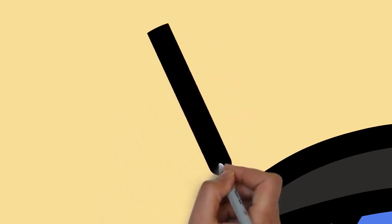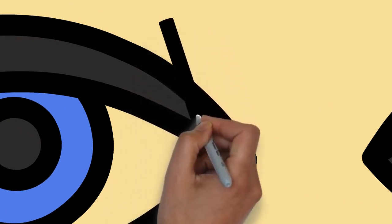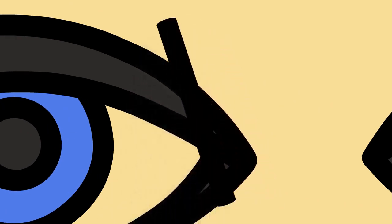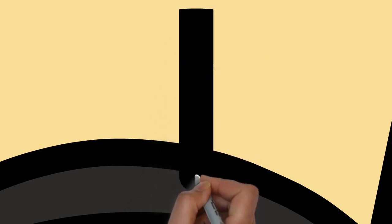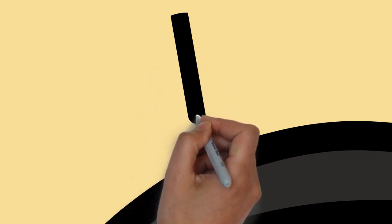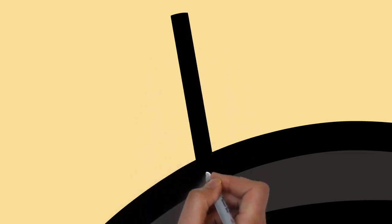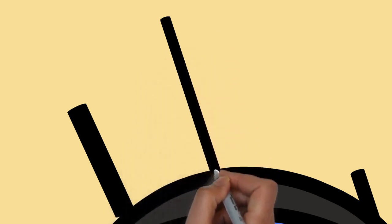In order along the optic axis, the optical components consist of a first lens, the cornea — the clear part of the eye — that accounts for most of the optical power of the eye and accomplishes most of the focusing of light from the outside world. Then an aperture, the pupil, in a diaphragm, the iris — the colored part of the eye — that controls the amount of light entering the interior of the eye.